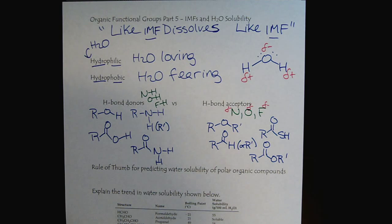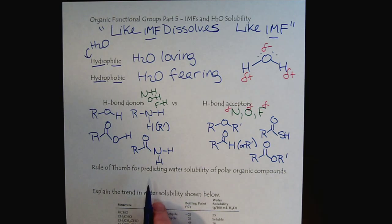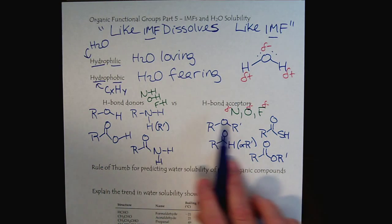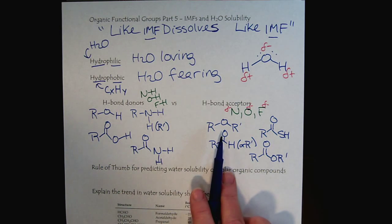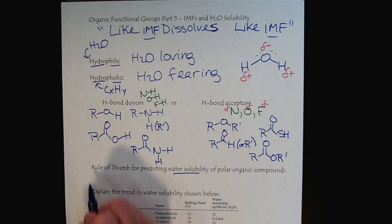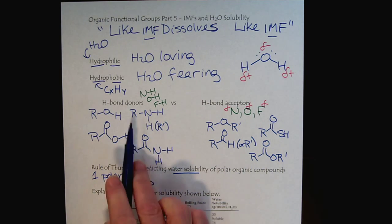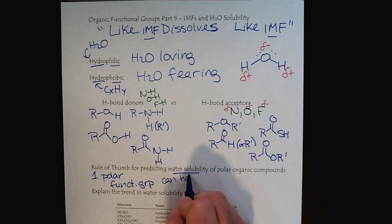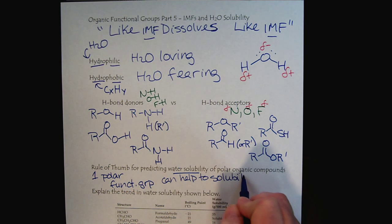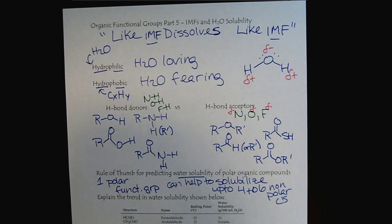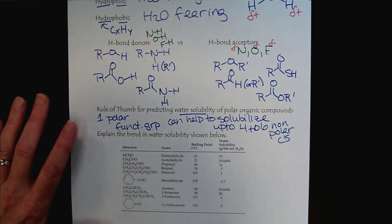With organic molecules, we tend to have a nonpolar hydrocarbon backbone that hates water, but we also have polar functional groups that do want to interact with water. Our rule of thumb for water solubility is that one polar functional group can typically solubilize up to four to six nonpolar carbons. This is a really helpful rule of thumb for predicting water solubility.